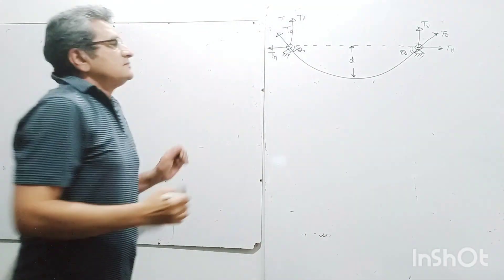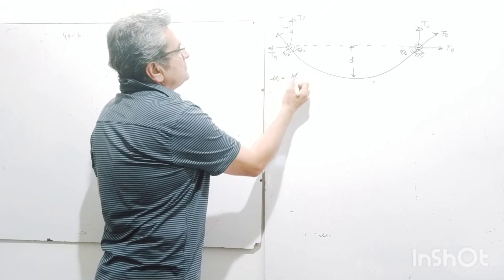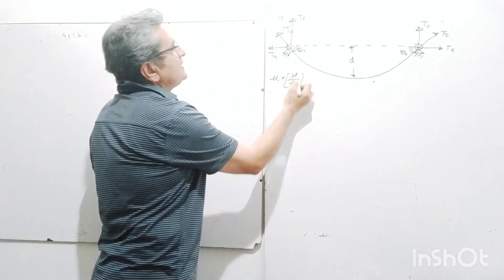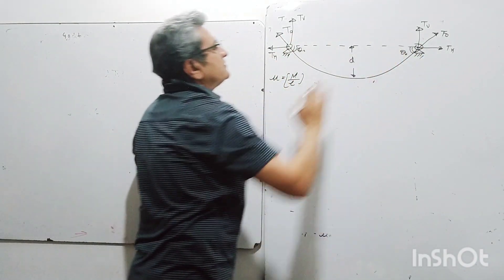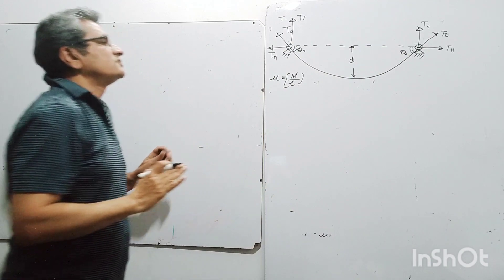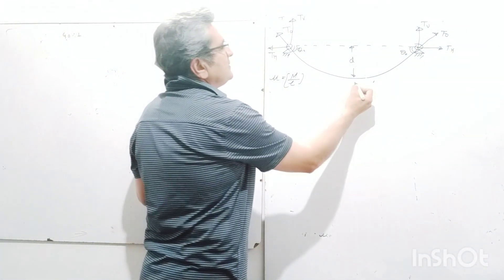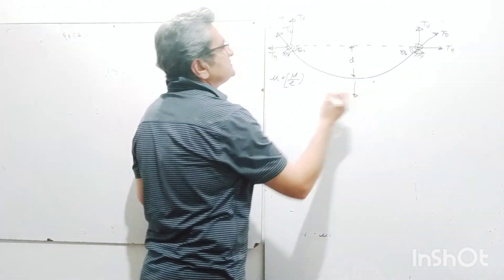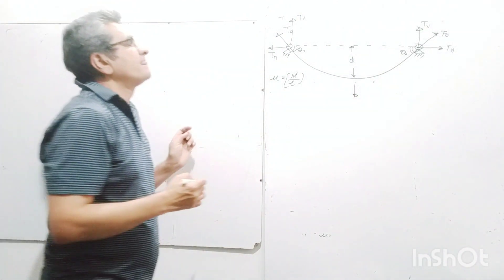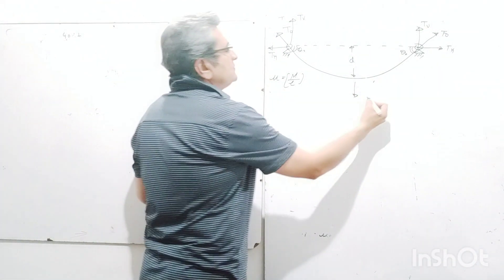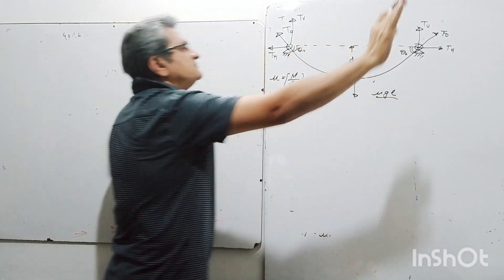Let the mass per unit length of the chain be mu, which is M divided by L, where L is the total length of the chain. Don't confuse L with the horizontal distance — it is the total length of the chain. So the total weight of the chain will be equal to mu·g·L.